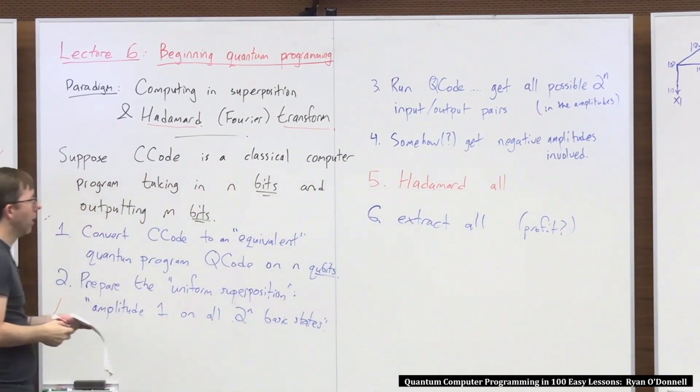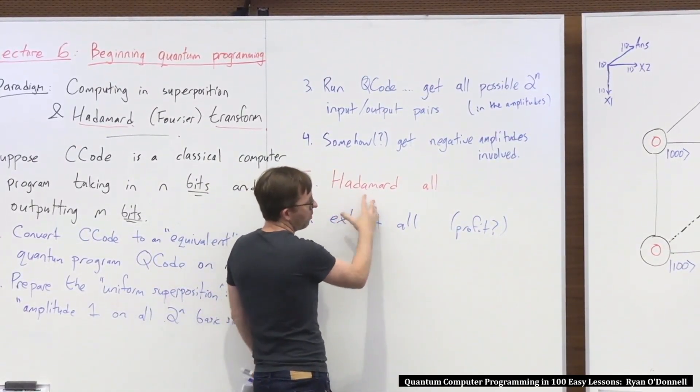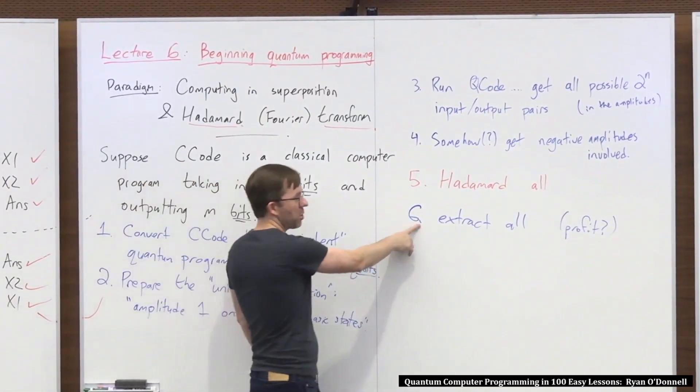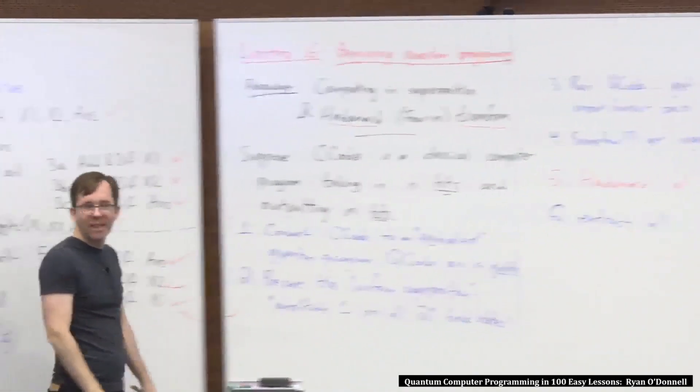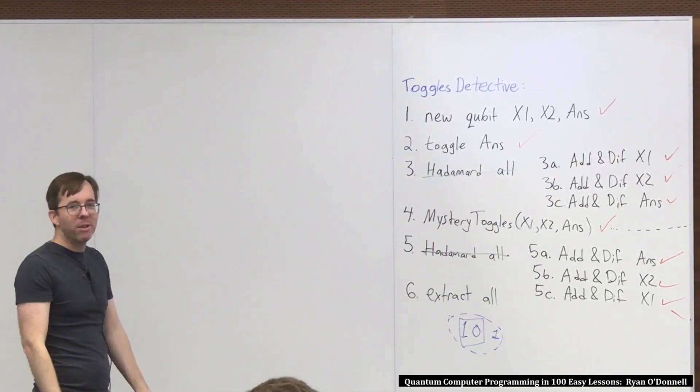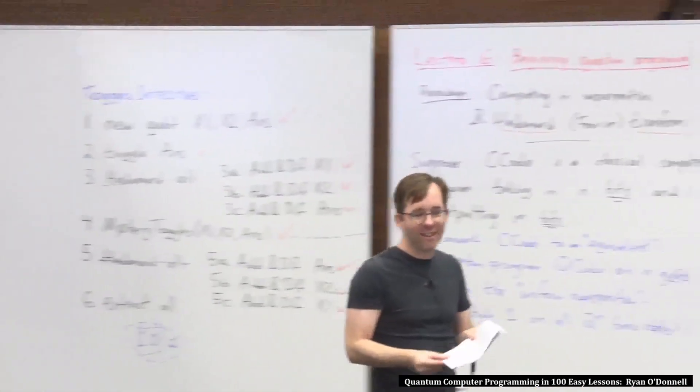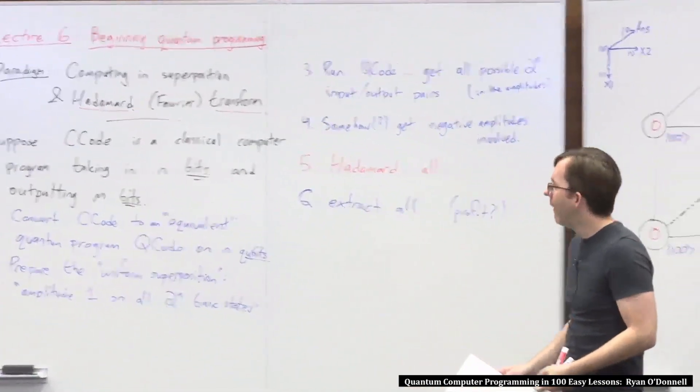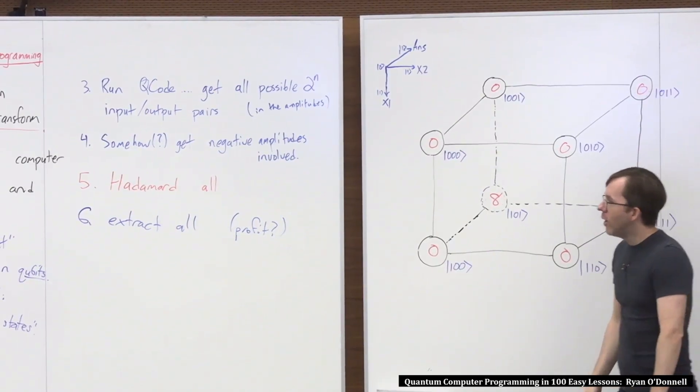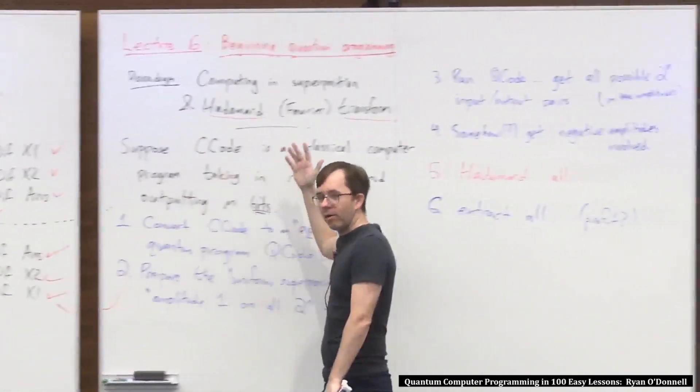Somehow, the amplitudes encode the actual numerical values of the amplitudes, encode some information about all possible input-output pairs for this function. And this, as we'll see, kind of does the Fourier transform to that data. And this Fourier transform mixes and matches and cancels stuff out and thereby maybe gets a lot of amplitude onto important signals in the data and very little amplitude on the unimportant signals in the data. And then the last step is basically just profit. Extract all. And maybe profit. So this is the plan. It's kind of like a rickety plan.